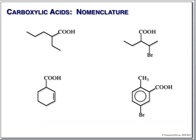Let's do some examples. Look at the first structure and decide which is the main chain. We have a 1, 2, 3, 4, 5, 6-carbon chain, but that doesn't contain the carboxylic acid. By our first rule, the carboxylic acid must be carbon number 1. So we're dealing with 1, 2, 3, 4, 5 carbons — it's a pentanoic acid. And we have an ethyl group at carbon 2: 2-ethylpentanoic acid.